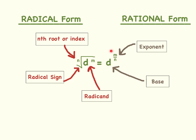Now let's talk about the right side of the equation. This term is expressed in rational form. Whenever the exponent can be expressed as a fraction, that's what makes it rational form. The base is the number or variable being raised to another power, and the exponent is the power you're raising it to. Any term expressed in radical form can always be expressed in rational form, and the same can be said the other way around — if you have a term in rational form, you can always express it in radical form. Now let's do some examples.